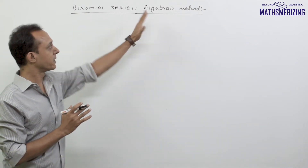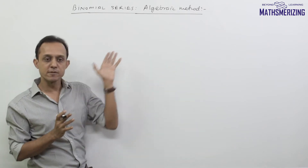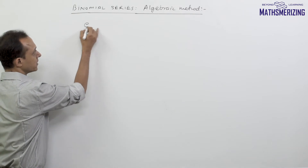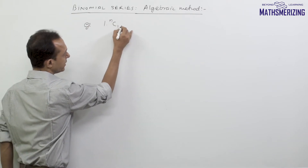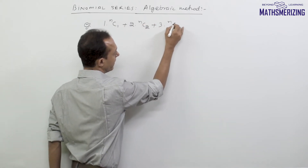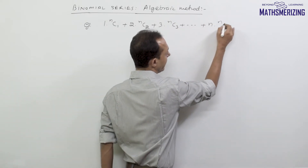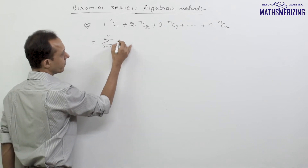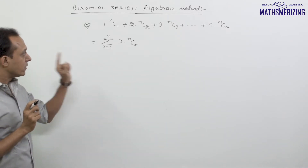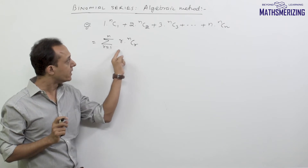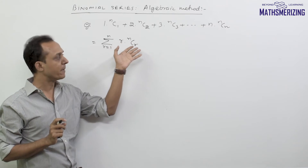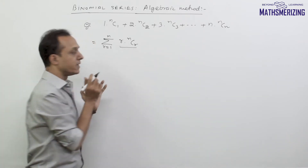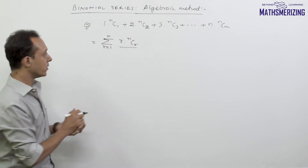Another very common method for binomial series is the algebraic method. In this method, we try to express the series in terms of summation and then work out the general term in such a way that we can simplify the summation. For example, suppose the question is to work out 1·nC1 + 2·nC2 + 3·nC3 up to n·nCn. I can express this series as summation where r varies from 1 to n of r·nCr. What I need to do is change this r and express everything in terms of some other function of n±1 or r±1, converting it to some other nCr for which the summation will be simple.